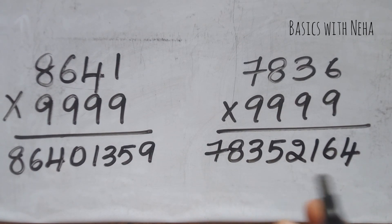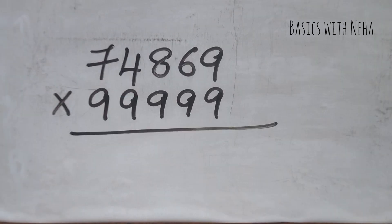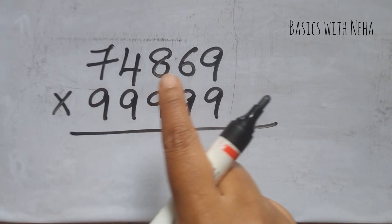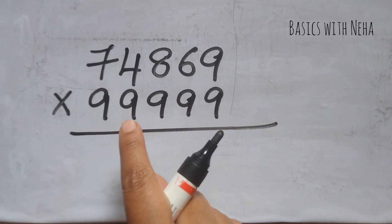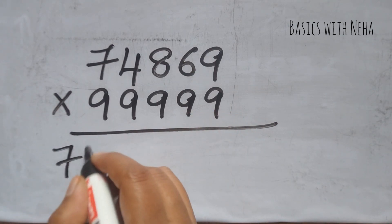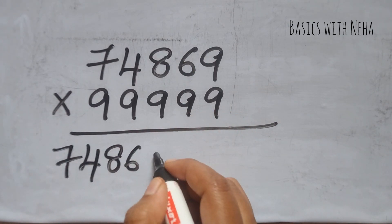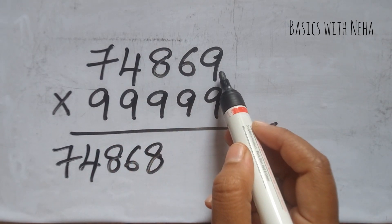Let's try 5 digit into 5 nines. 74869 into 99999. The answer will be 74868. I have reduced this number by 1.